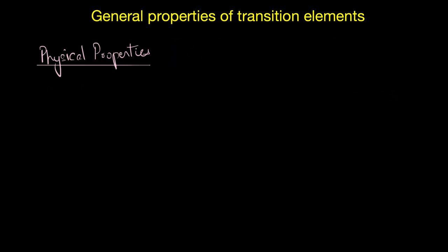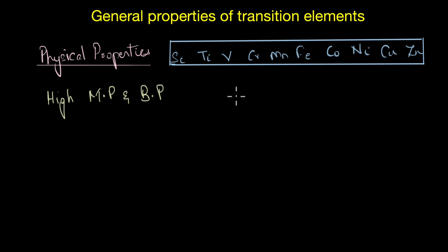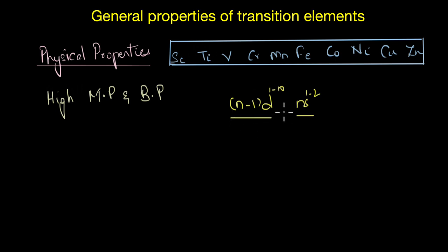Transition metals are also quite hard and have high melting and boiling points. This high melting point is due to the participation of a large number of electrons. We usually expect the outer valence electrons of an atom to be involved in bonding, but in the case of transition elements the outer electronic configuration is (n−1)d¹⁻¹⁰ ns¹⁻². The energy difference between the ns electrons and the (n−1)d electrons is quite low, and that is why electrons from the (n−1)d sub-shell also participate in metallic bonding along with the ns electrons.